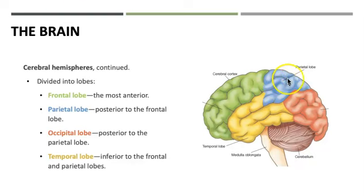The parietal lobe is just posterior to the frontal lobe. It is involved in attention, language, and sensory information such as touch, temperature, and pain. We also have visuospatial processing here, including skills in math, spelling, and hand-eye coordination.